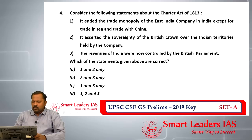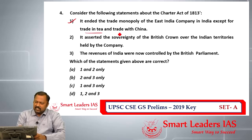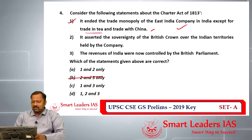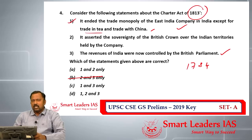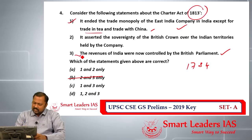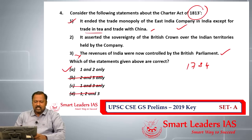Question number four is about the Charter Act of 1813. The first statement — that it ended the trade monopoly of the East India Company in India except for trade in tea and trade with China — is correct. The third statement says revenues of India were now controlled by the British Parliament, but this happened in the 1784 Pitt's India Act with the Board of Control, not in 1813. So the third statement is incorrect, and the answer for question four is A.